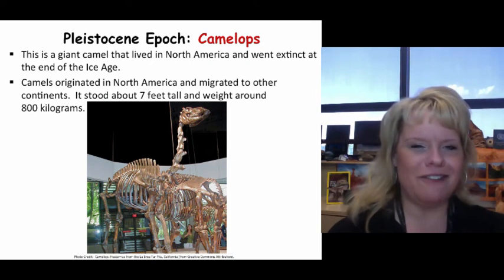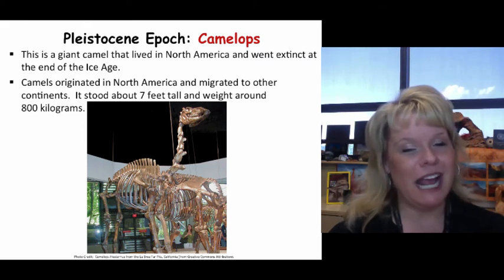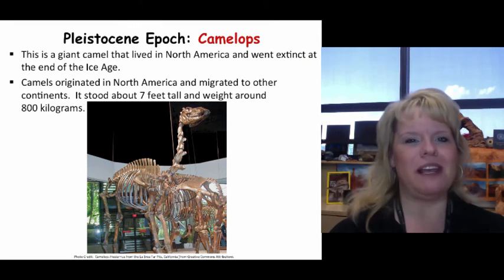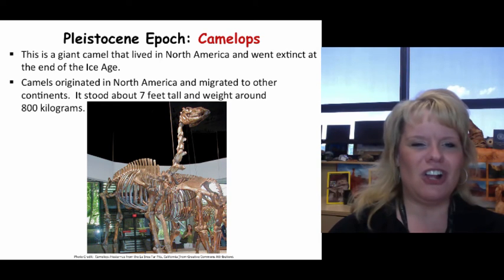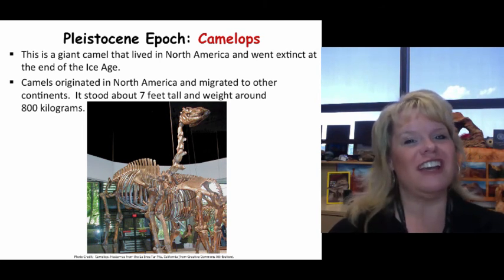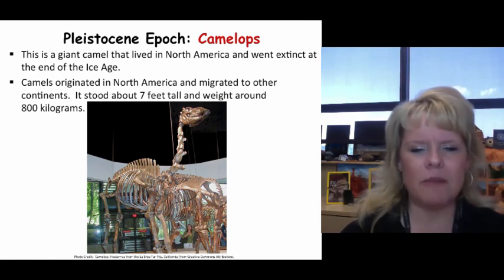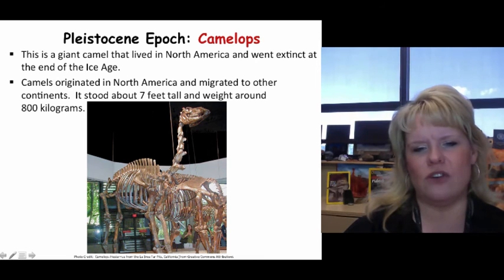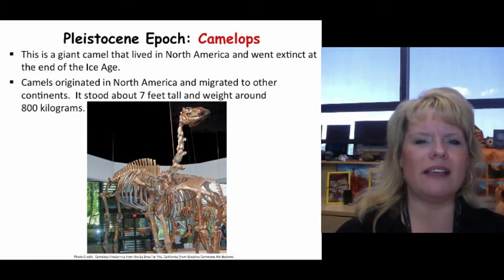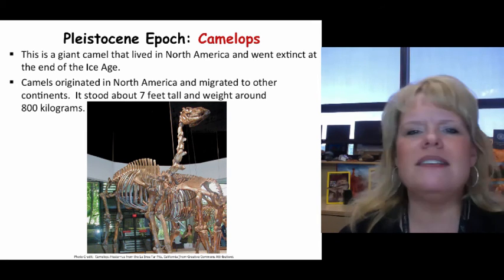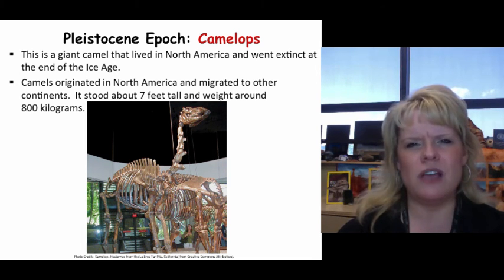Camelops is noteworthy because camels actually evolved in North America — not where they live today — and migrated out. Camelops was one of the large giant camels of the Pleistocene that went extinct at the end of the last Ice Age. They stood about 7 feet tall and weighed about 800 kilograms. Unlike modern camels, they didn't have the same humps. Their vertebrae extensions suggest extra muscle and tendon attachments, indicating Camelops likely migrated regularly. We find camel fossils alongside mammoths, and camels had really keen eyesight, unlike elephants.